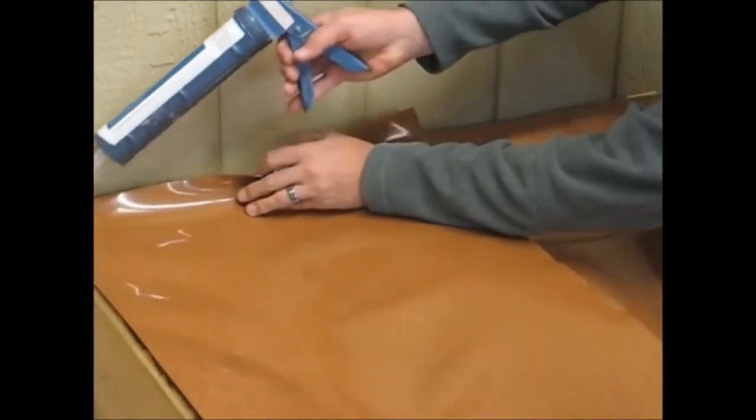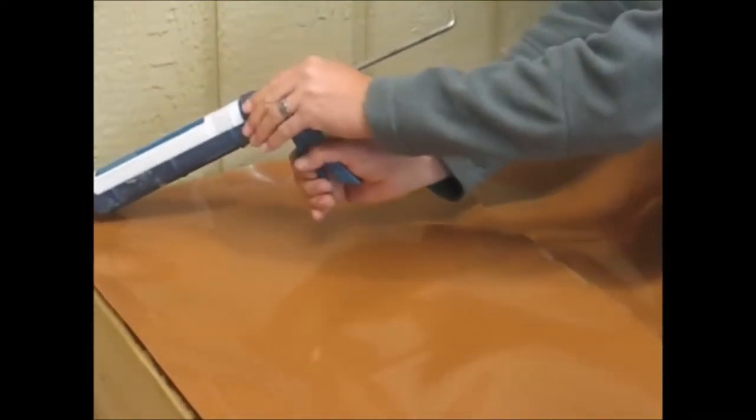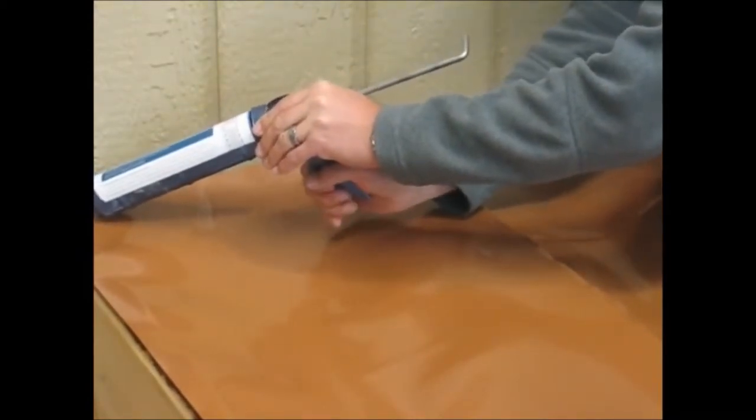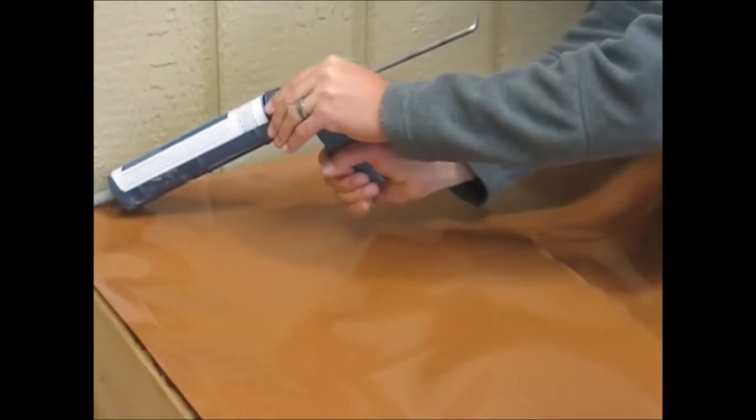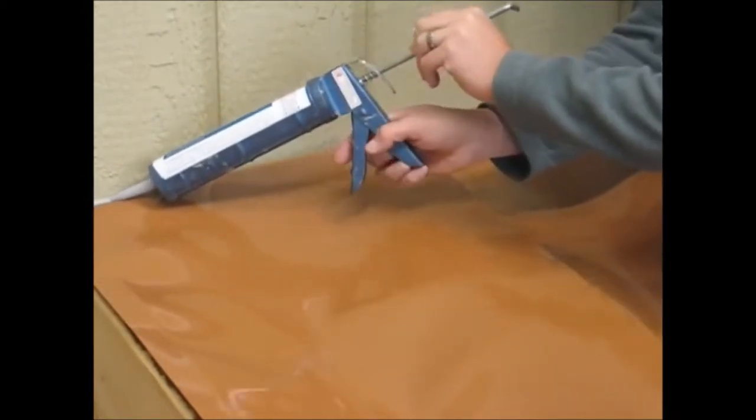You'll just lift up the trough material and run a heavy bead in between the ledger board and the house, making sure that you fill all voids, cracks, and crevices.